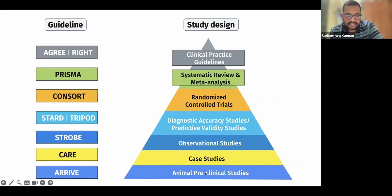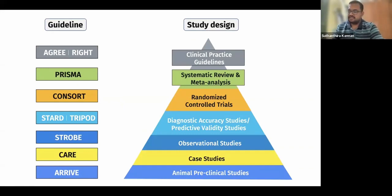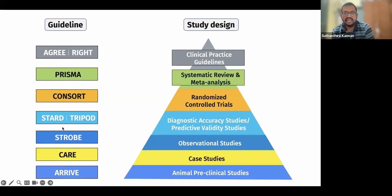For animal studies, there is a guideline called ARRIVE — download the ARRIVE guidelines and write accordingly. For case studies, there is something called the CARE report guidelines. For observational studies, there is STROBE — Strengthening the Reporting of Observational Studies. For diagnostic studies, there is the STARD guidelines. For systematic reviews and meta-analyses, there is PRISMA. For RCTs, there is CONSORT.